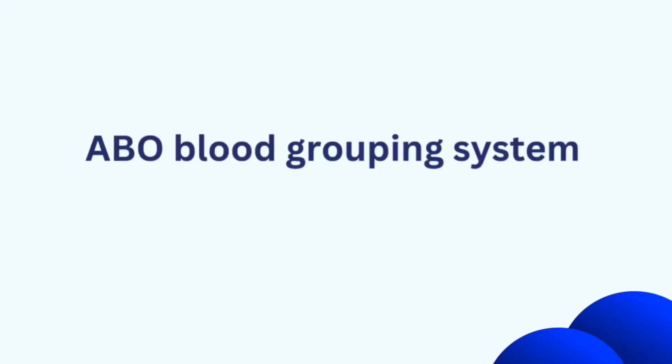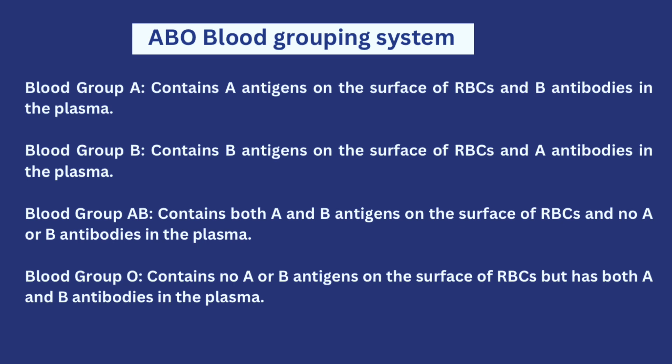For the ABO blood grouping system, there are two major things taken into consideration: antigen A and antigen B. The presence or absence of these antigens on the surface of a person's red blood cell is used to classify blood into four main types. The first is blood group A, which contains antigen A on the surface of the red blood cells and B antibodies in the plasma.